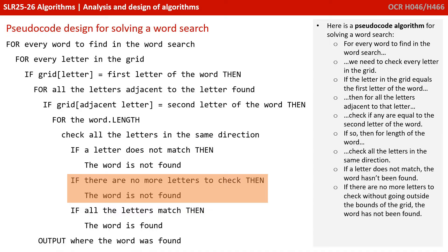If there's no more letters to check because we're outside the bounds of the grid, then the word is not found. If all the letters match, then the word is found. And we could finish by outputting that the word was found.